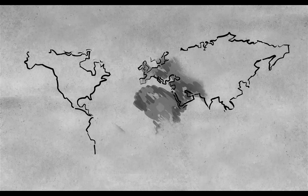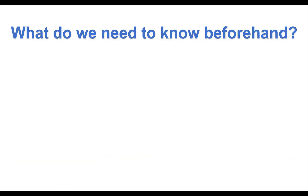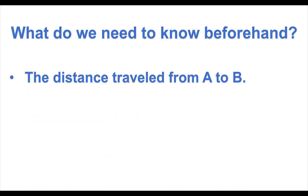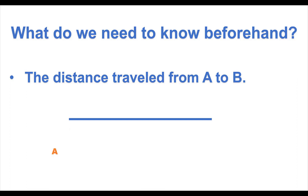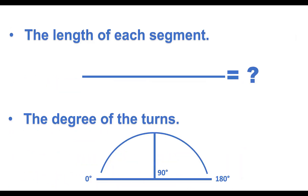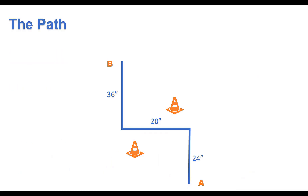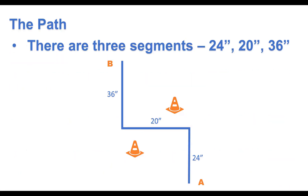Let's draw a map of what we want the robot to do. To complete the maze, the robot must follow a specific path. We need to know the distance traveled from one point to the next to determine how to program the robot to move along the desired path. There are three segments to be measured and two 90-degree turns. The segments are 24 inches, 20 inches, and 36 inches.